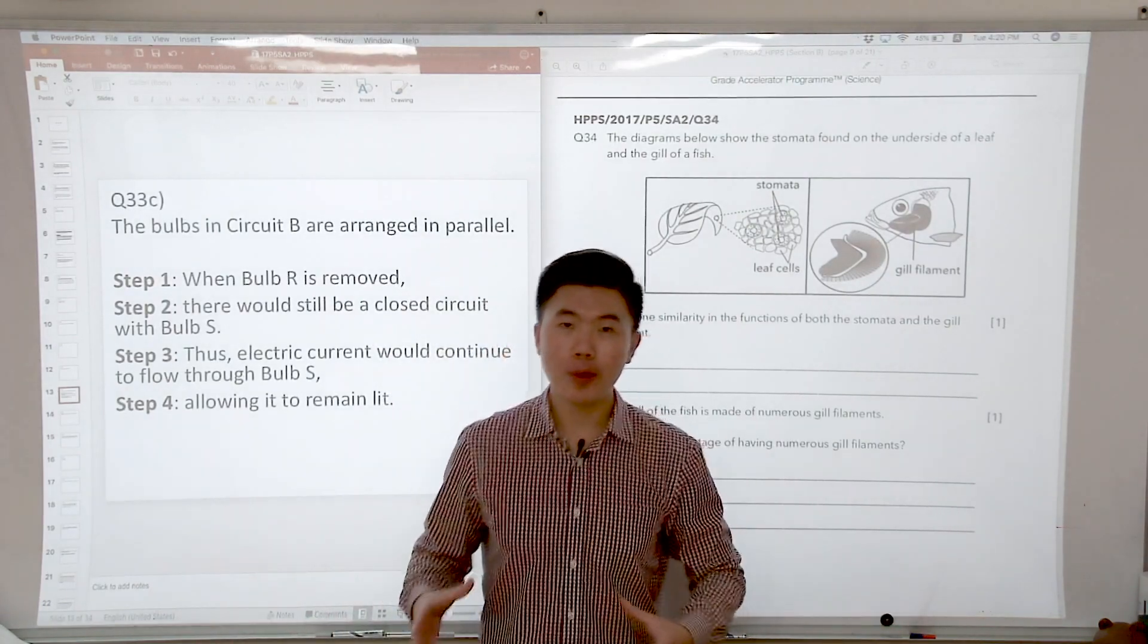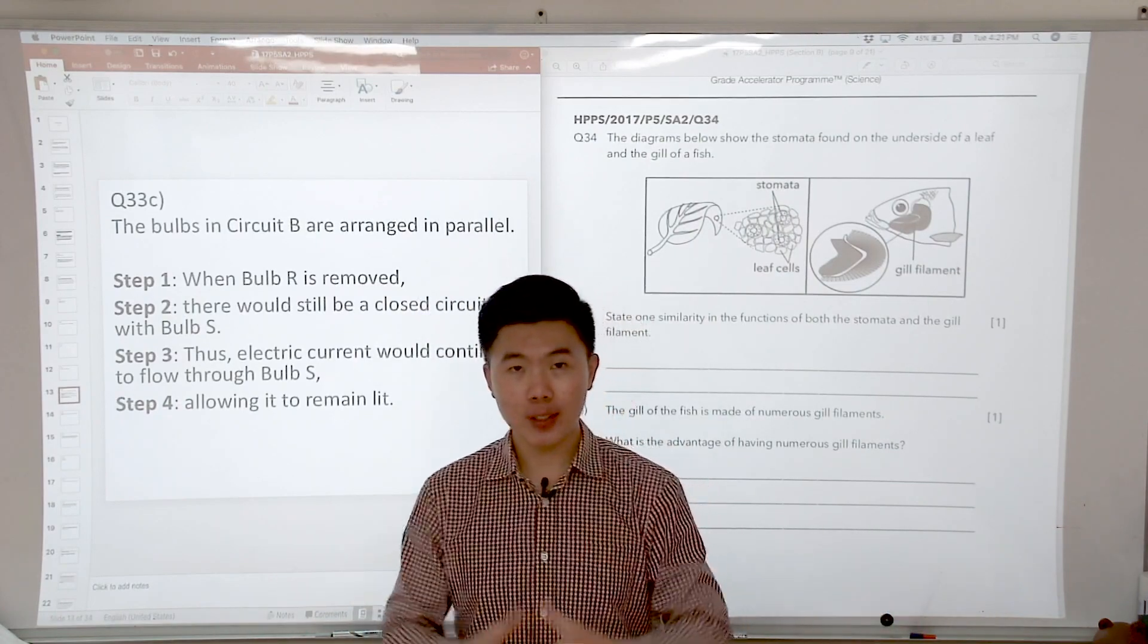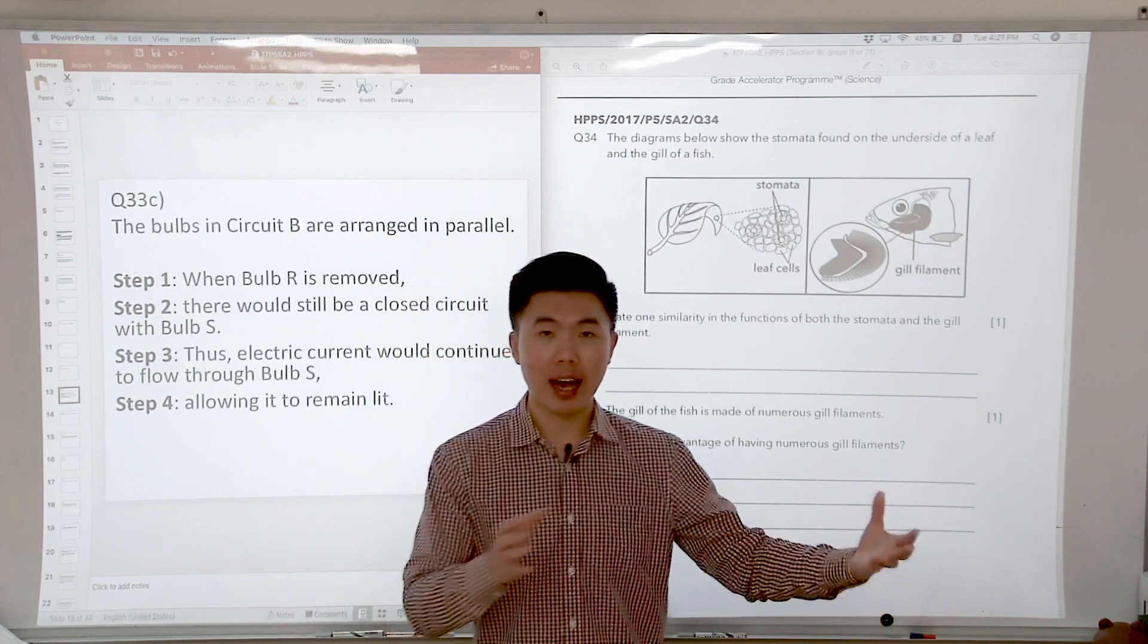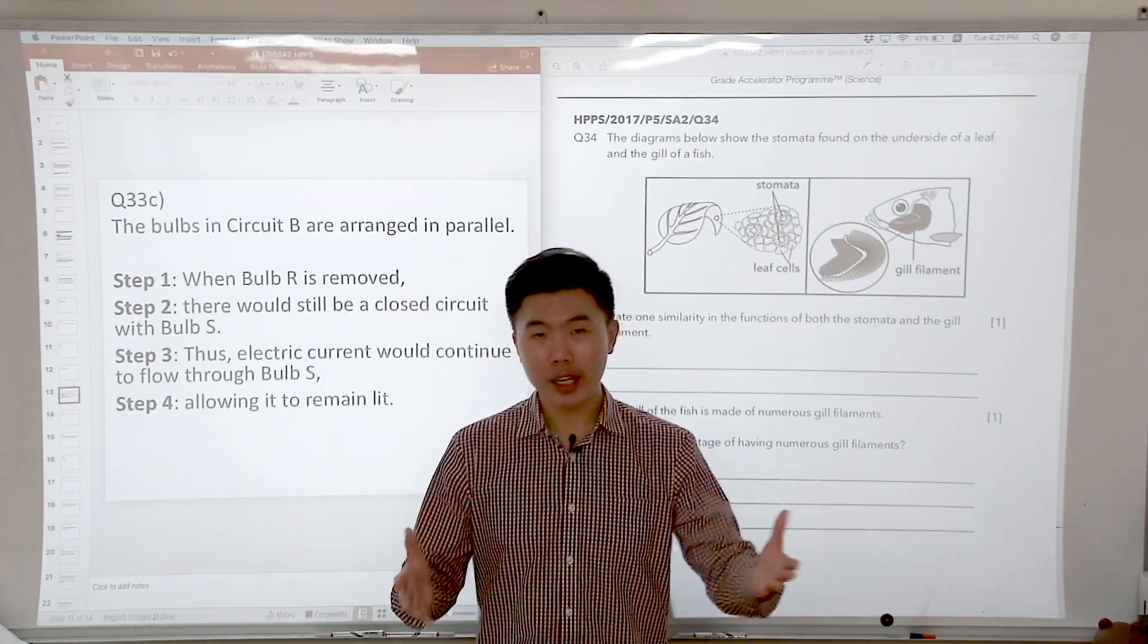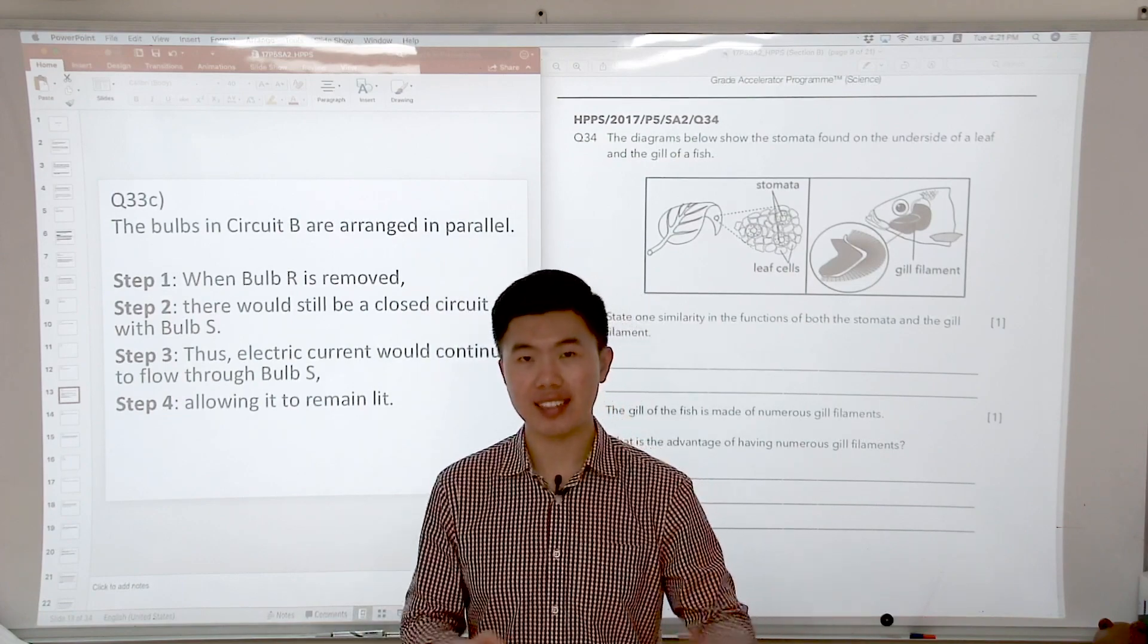So where do we find stomata? We find stomata mostly on the underside of the leaf. So there are tiny openings found mostly on the underside of the leaf. What is the key function of the stomata? They allow for the exchange of gases.